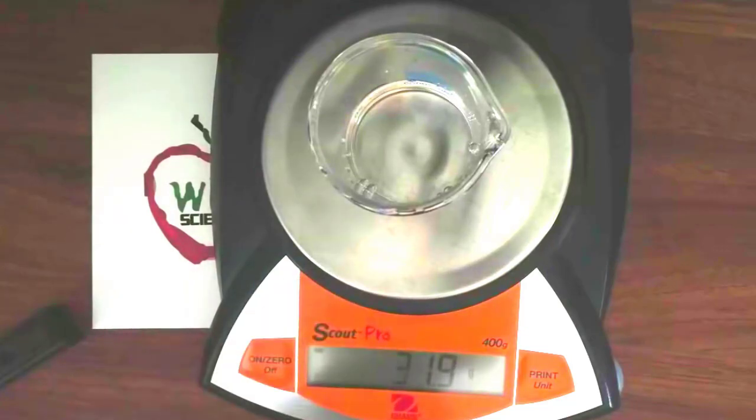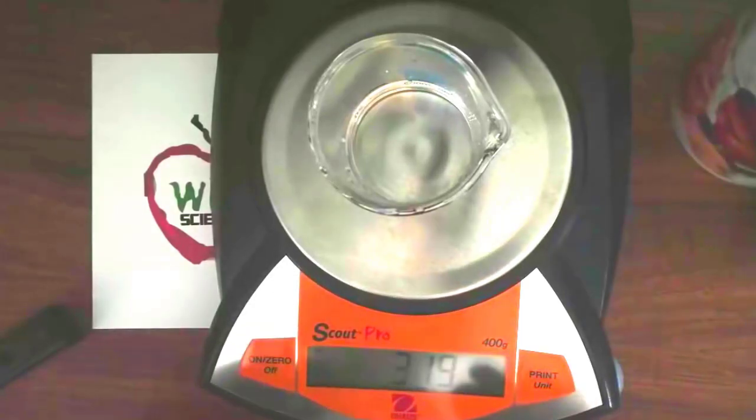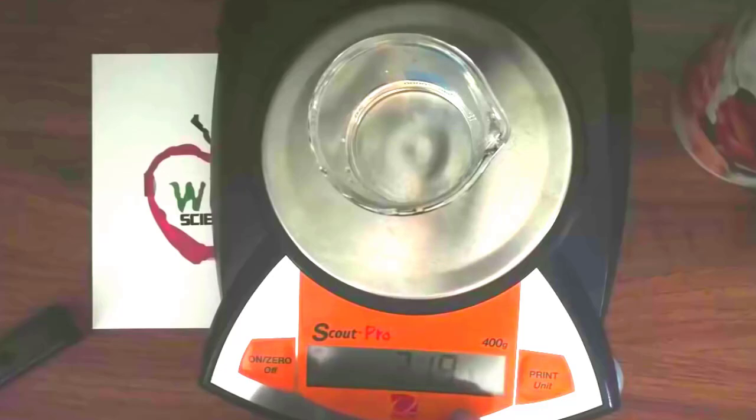And this gives us 31.9 grams of water. So this is another quantitative data, or measurement. So again, this is a quantitative observation, which is also a measurement. That has a number and a unit. G, which is gram.